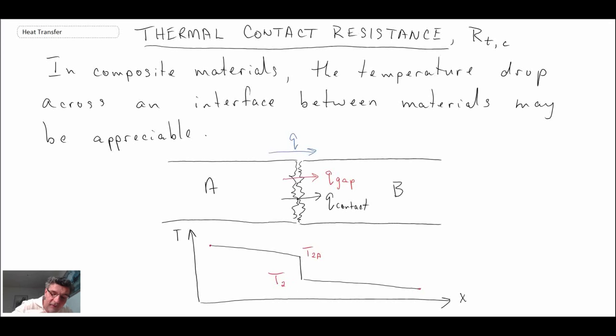And that discontinuity reduces the amount of conductive heat transfer that is occurring across that gap, and so it's actually a bad thing that we don't want to have. And the way that we quantify that gap is we use a thing called the thermal contact resistance.